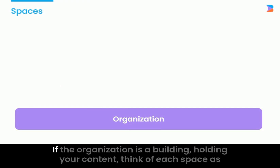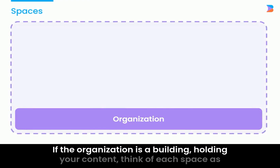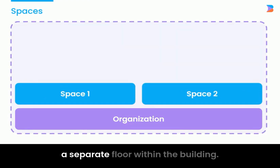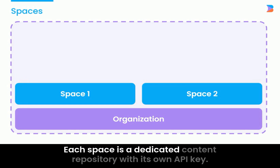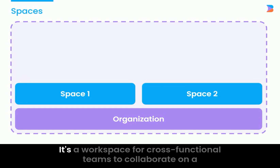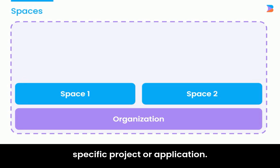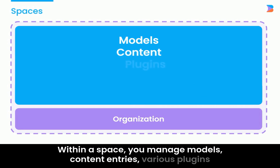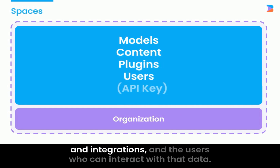Spaces. If the organization is a building holding your content, think of each space as a separate floor within the building. Each space is a dedicated content repository with its own API key. It's a workspace for cross-functional teams to collaborate on a specific project or application. Within a space, you manage models, content entries, various plugins and integrations, and the users who can interact with that data.